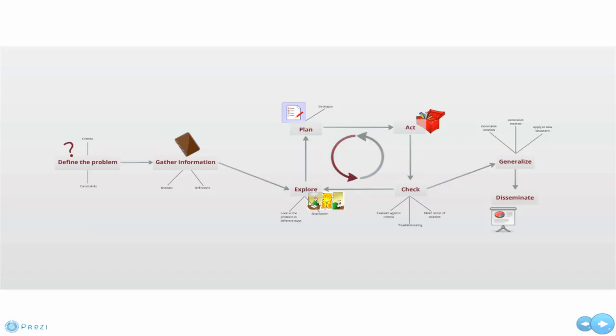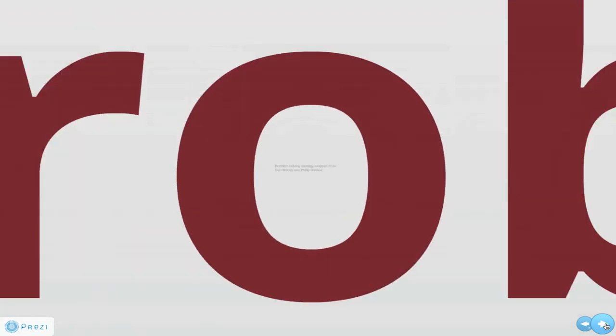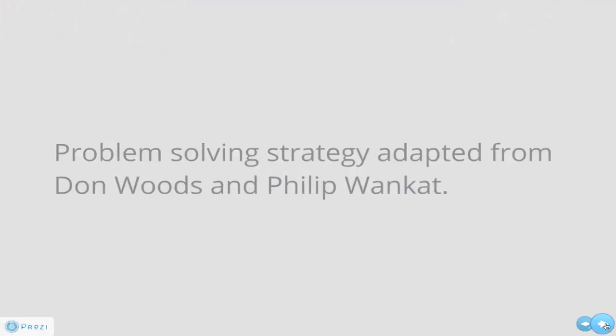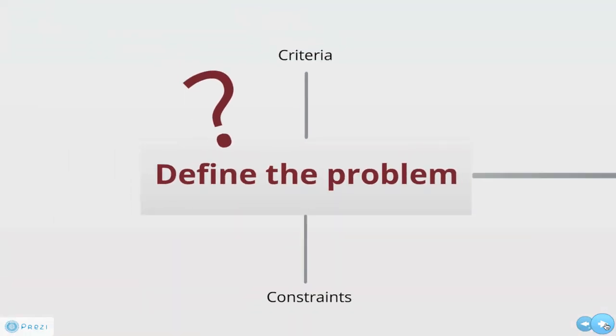While different people might approach a problem in different ways, using an explicit strategy for problem solving can be very helpful. You can find different problem solving strategies in the literature. The strategy that we will present in this video is adapted from Don Woods and Philip Wonkat. The first step is to define the problem. What are the criteria? What are the constraints?